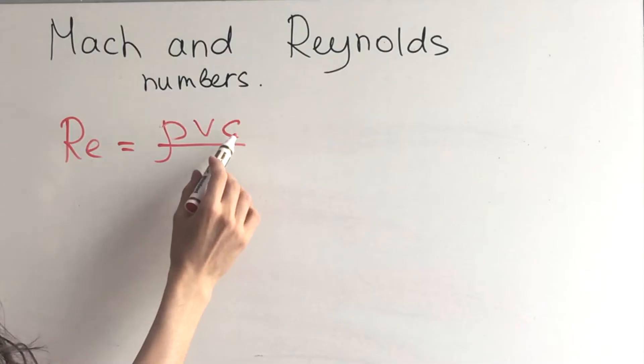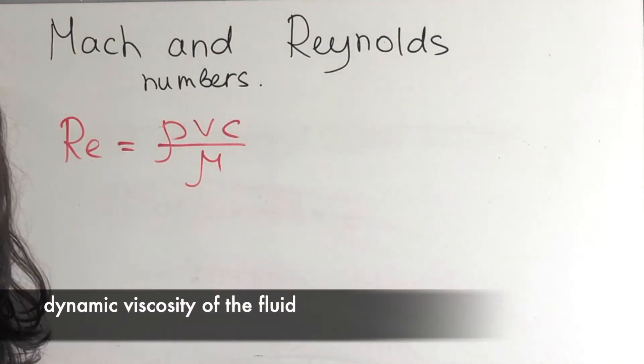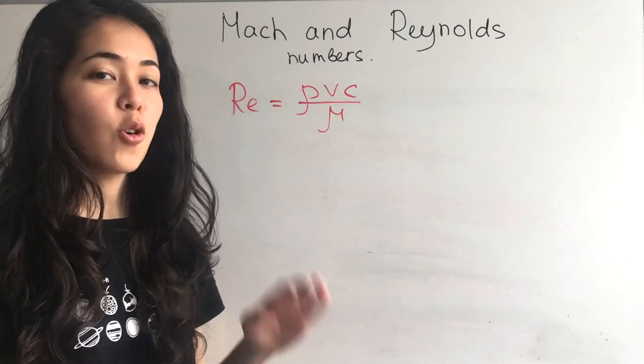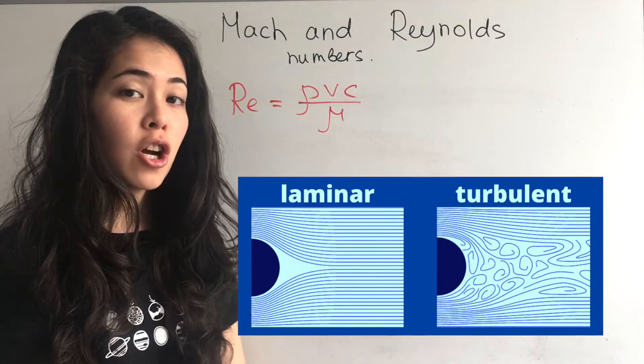Remember what the chord is from the wing parameters video. Mu is the dynamic viscosity of the fluid. In our case it's going to be air. So Reynolds number will tell us if the flow is laminar or turbulent.